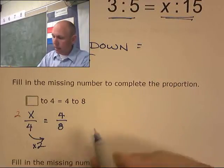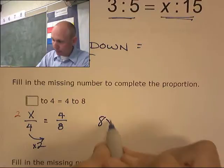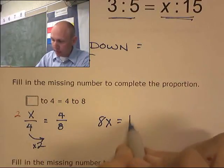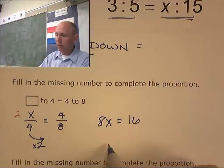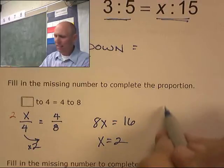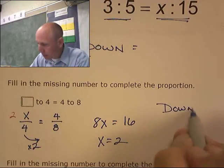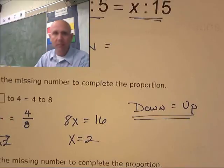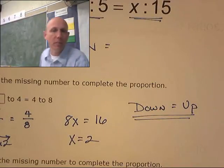But let me show you down equals up. Down, I have 8x equals up, which is 16. So what would x have to be? x would have to be 2. Down equals up. I love this. Down equals up. I wonder if I can copyright that or trademark it or something.